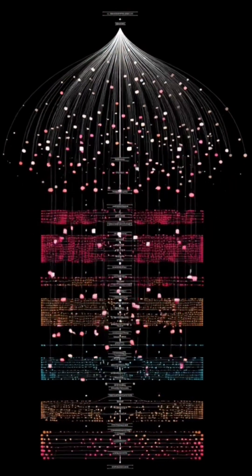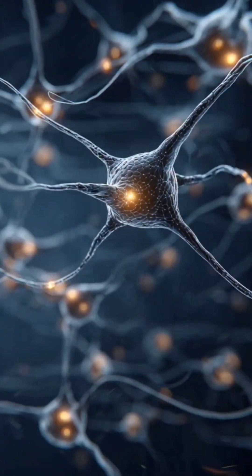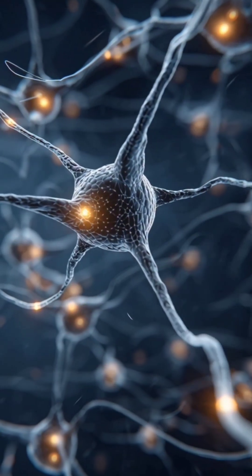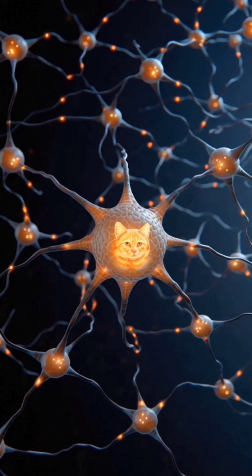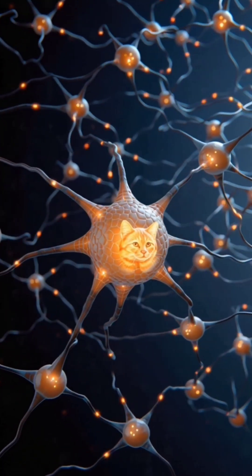In the middle, the system decides which parts are more important and which are less. At the end, it gives a final answer, such as recognizing a cat in a photo or saying yes or no.